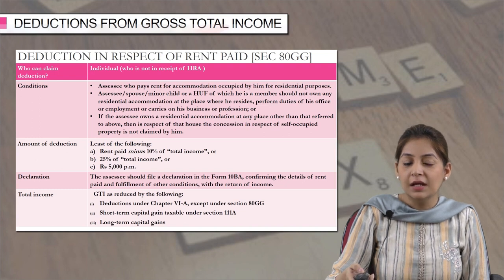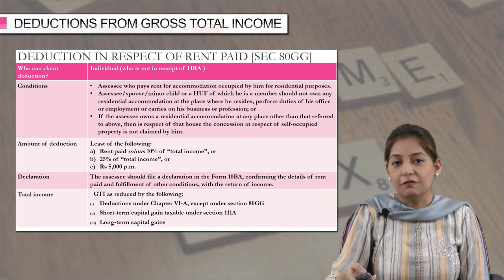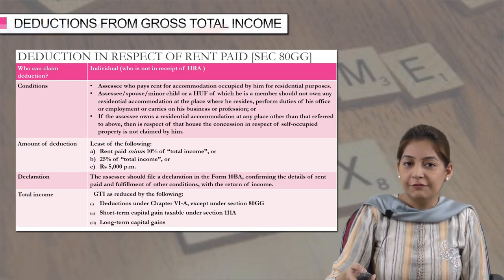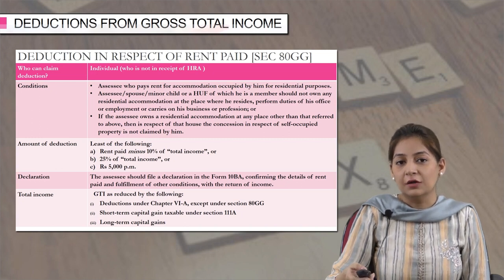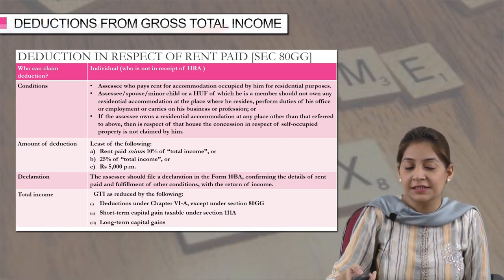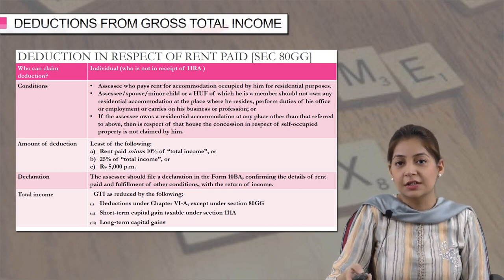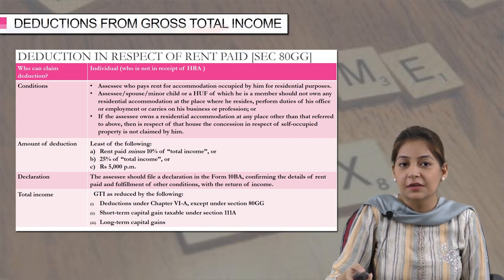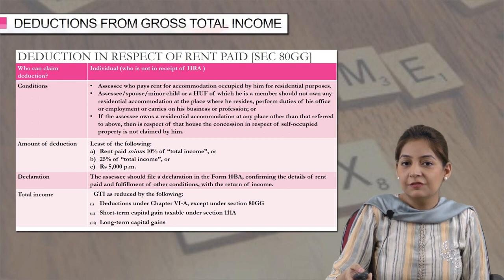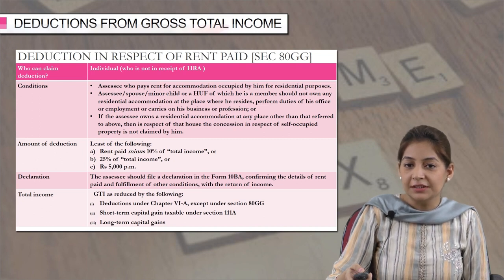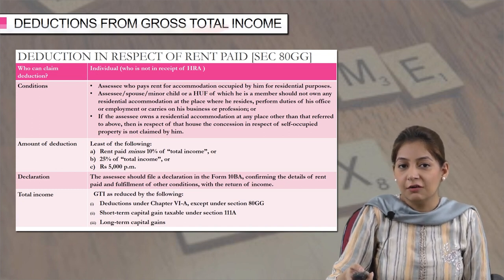The three amounts are: number 1, the rent paid by the assessee minus 10 percent of his total income; or number 2, 25 percent of his total income; or number 3, rupees 5,000 per month which makes rupees 60,000 a year. The least of these three amounts can be claimed as deduction under section 80GG. To claim the deduction, you need to file a declaration in form 10BA confirming the details of rent paid and fulfillment of all conditions while filing your return of income.